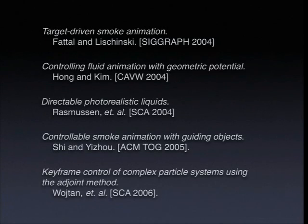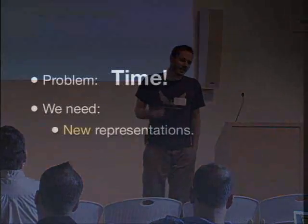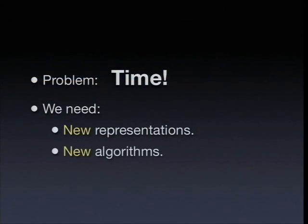The fundamental issue I realized in doing this is time. Running a fluid simulation is extremely time consuming if you want to do it at high resolution. Running these controlled fluid simulations requires re-running fluid simulations over and over again, doing sensitivity analysis over your control variables to find the values which match your keyframe sequence. There is a major problem in dynamical simulation: the dimensionality of the problem and the time it takes. We need fundamentally new representations of dynamical systems and new algorithms which act on these representations to do faster simulation.